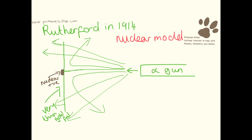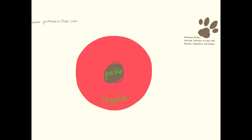Every so often you'd get one that would come straight back. This led Rutherford to introducing the nuclear model, where we have a positive bit in the middle. This positive bit in the middle would allow most of the alpha particles to go straight through because there was nothing positive there to stop them. Some of them would be deflected a little bit as they got close to the nucleus, and then very occasionally some of them would come straight back. This is the model that Rutherford came up with — a positive middle and a negative surrounding.